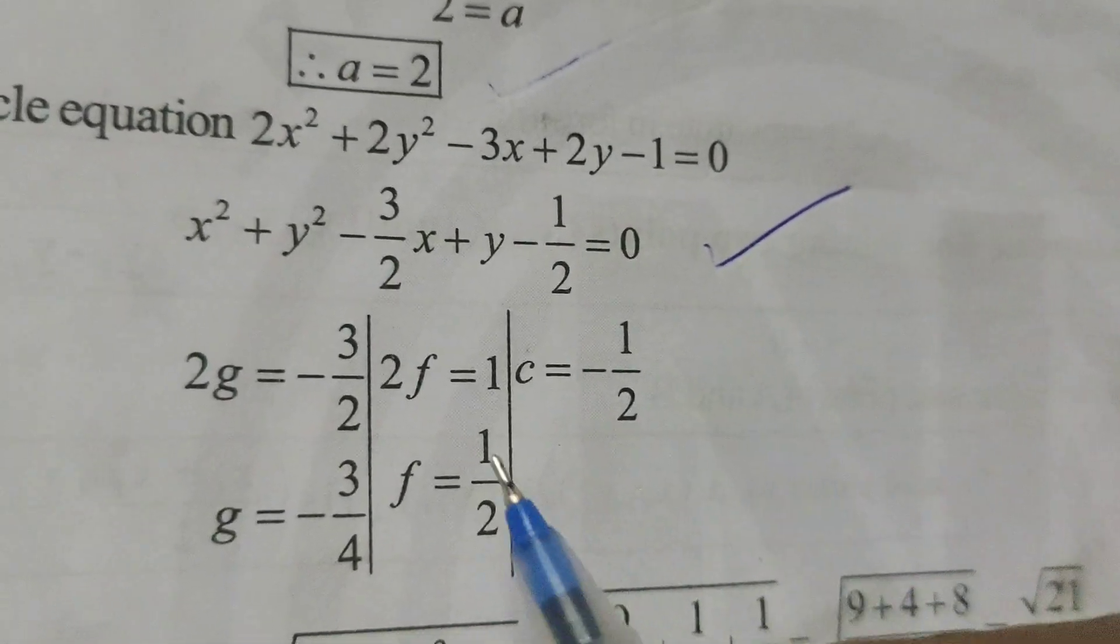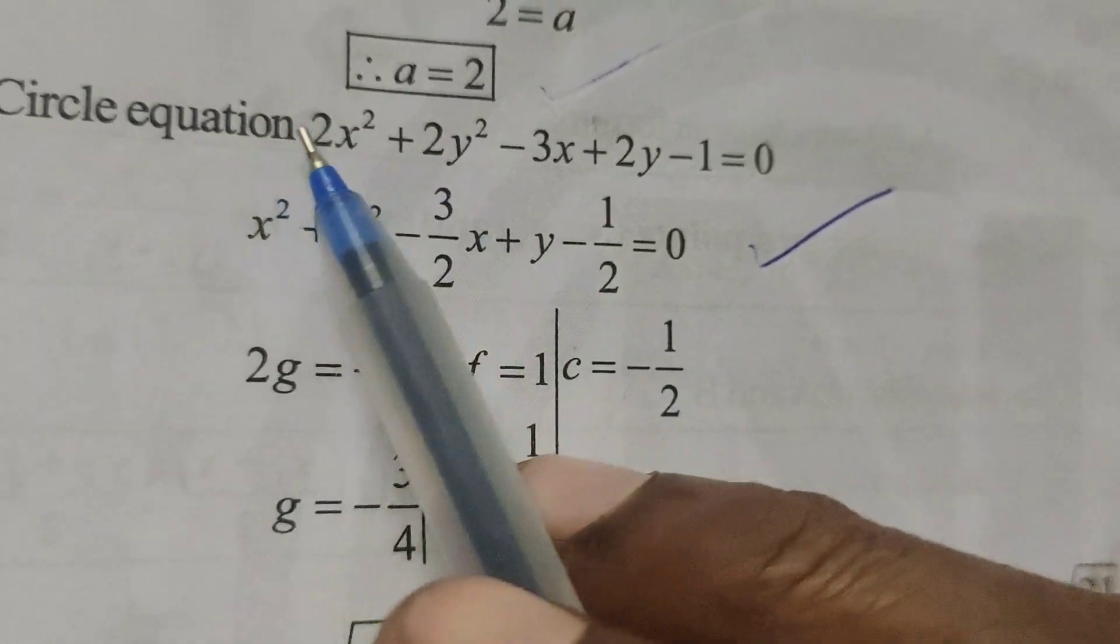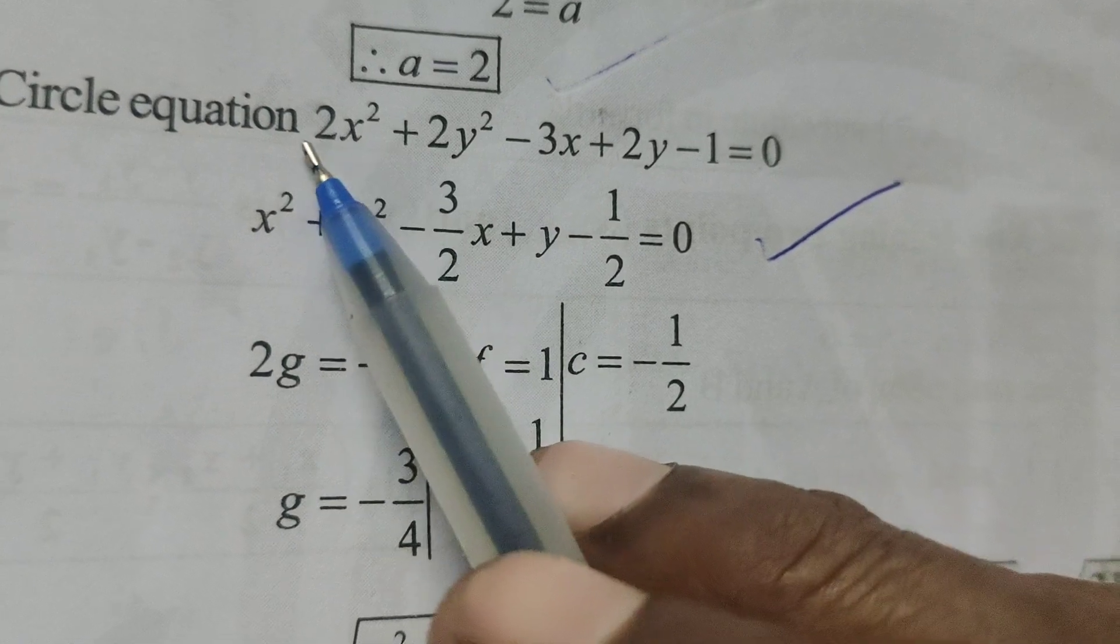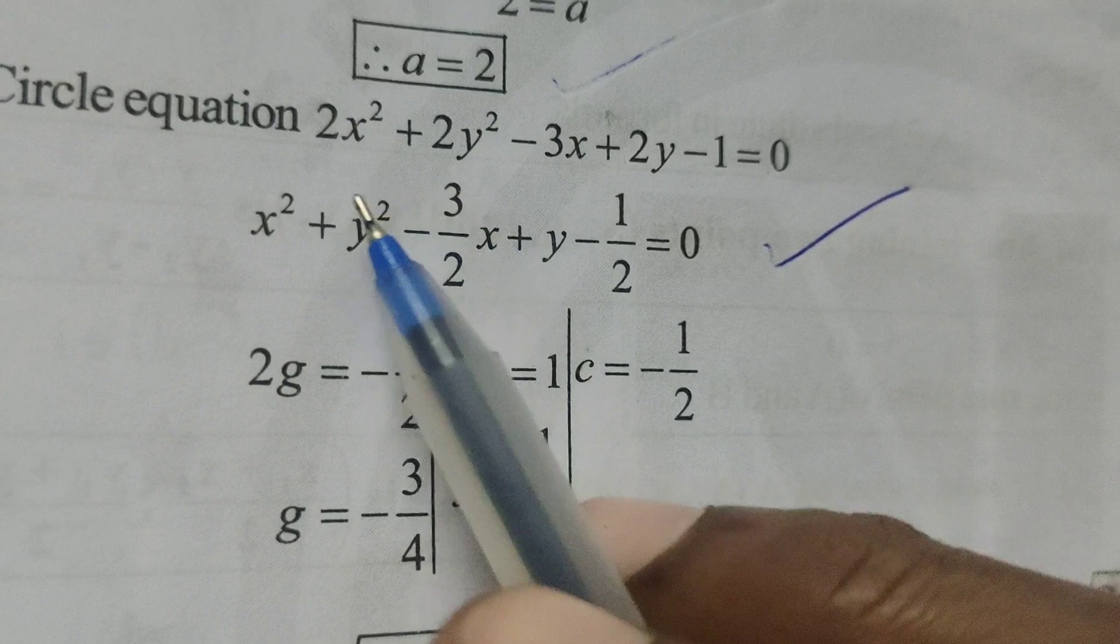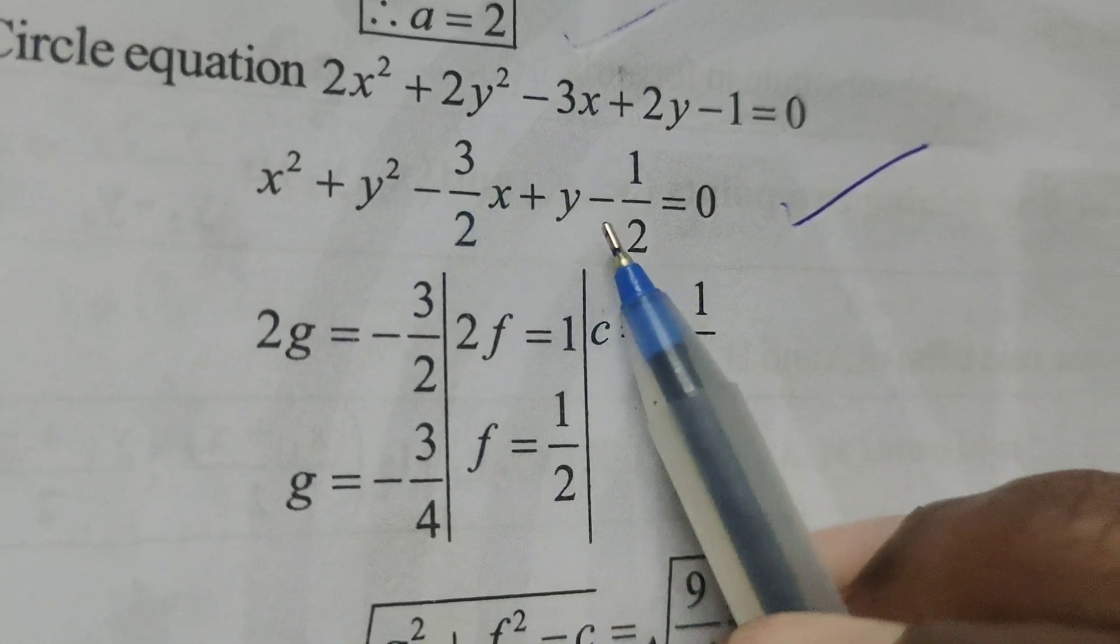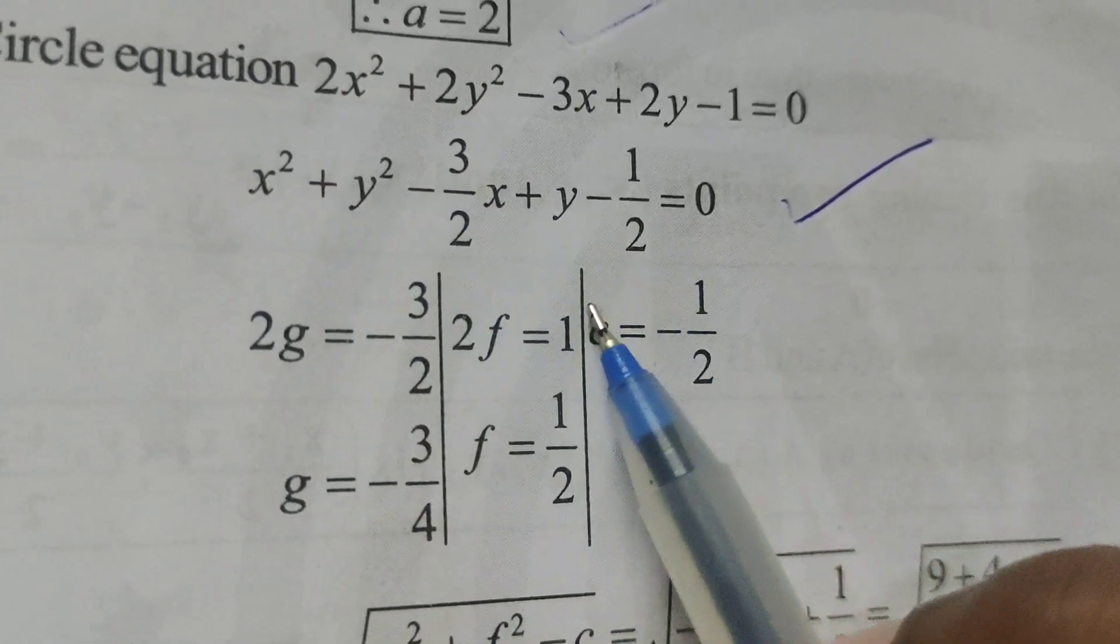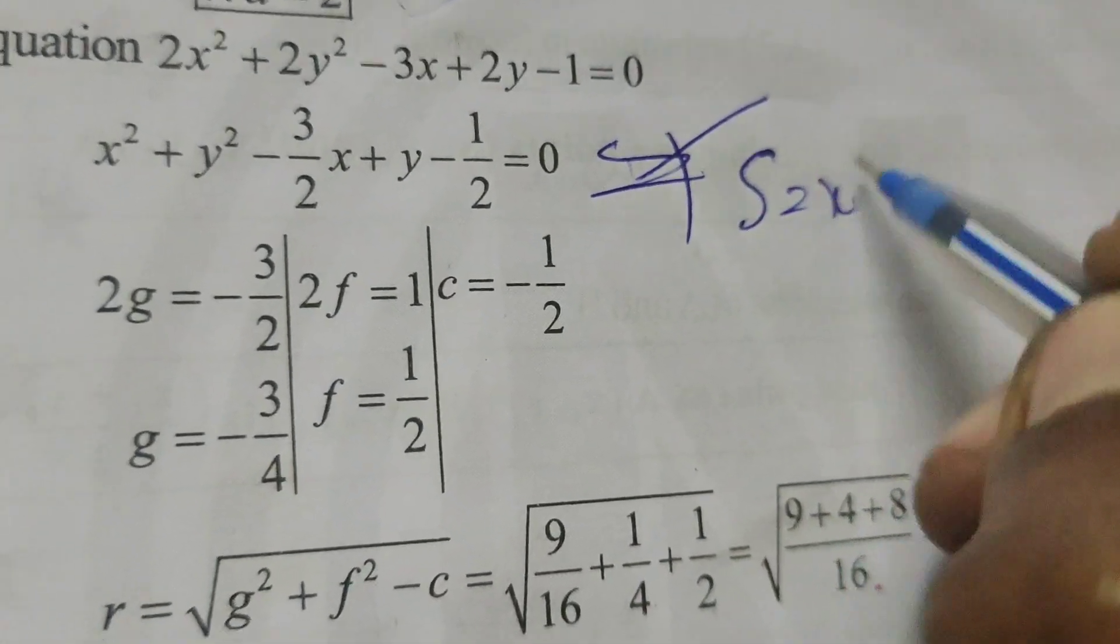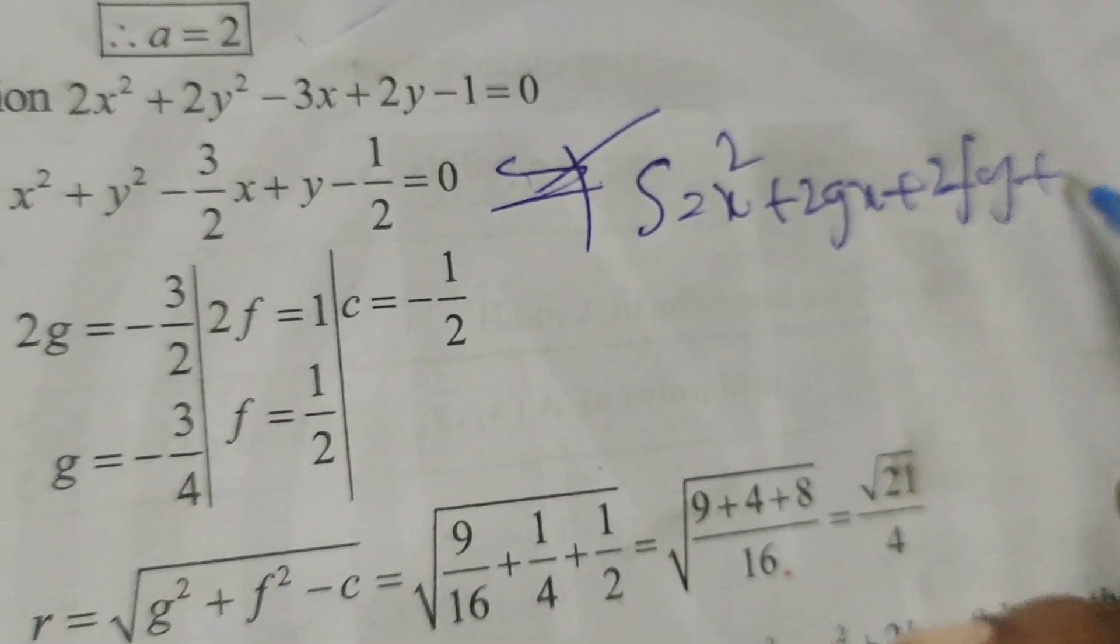Now find out g value, f value, and constant value. Here, in this equation, coefficient of x square is there, 2, and also y square, here 2. Therefore, simply divided by 2, in this whole equation, by the standard form of the circle equation, we will get here. So, in this equation, comparing the standard circle equation, x square plus 2gx plus 2fy plus c equals to 0.